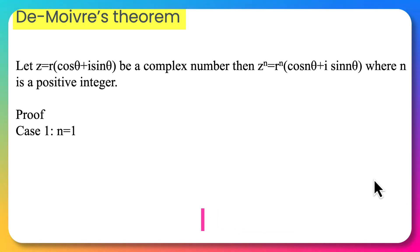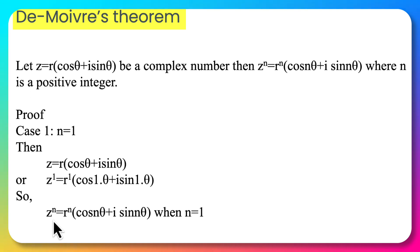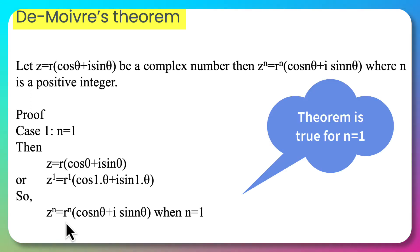Let us start with case 1 where n equals 1. Then the given complex number z can be written as z^1 = r^1(cos 1θ + i sin 1θ), which ensures that z^n = r^n(cos nθ + i sin nθ) when n equals 1.